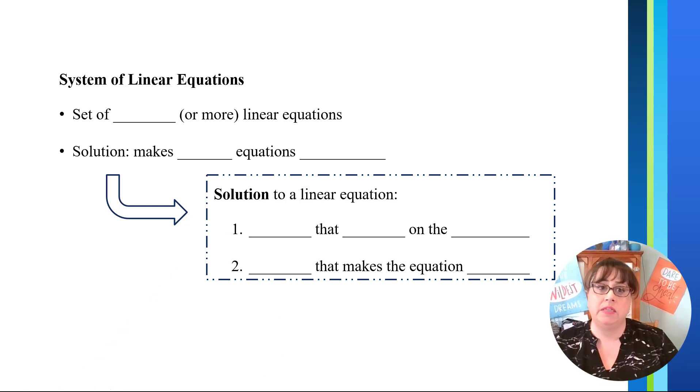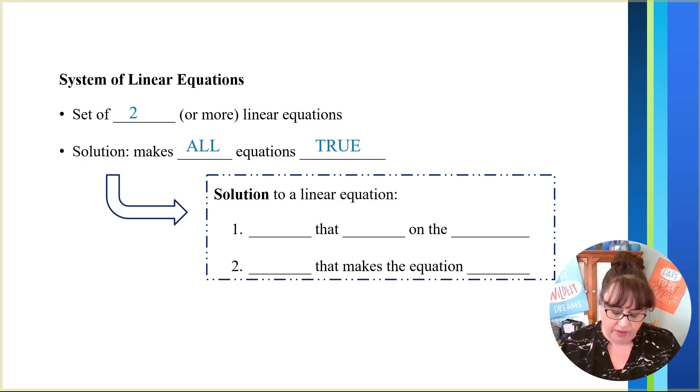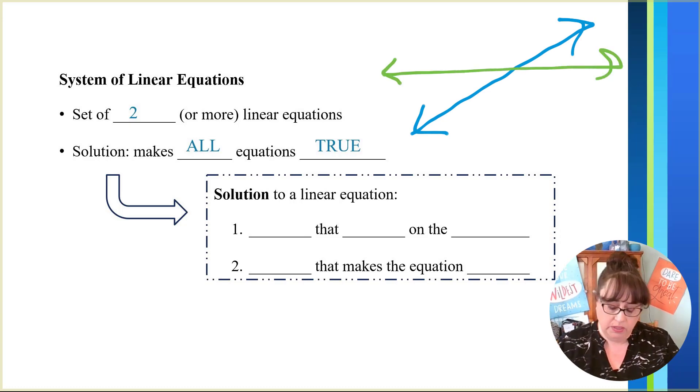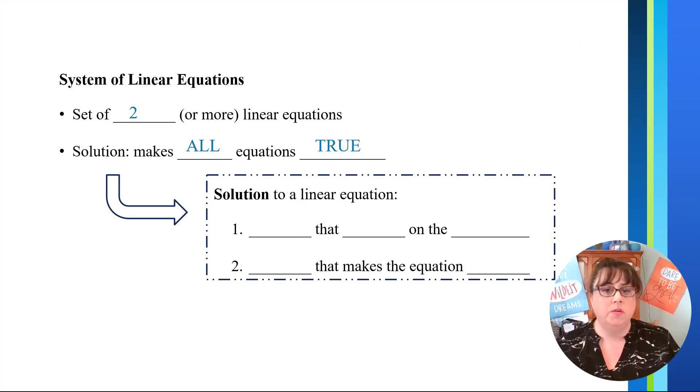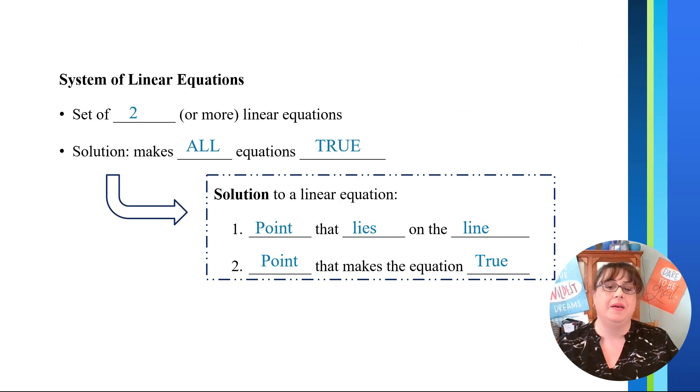So before we get started, we need to talk about what a system of linear equations even is. It is a set of two or more linear equations and what we're looking for is the solution that is going to make all of those equations true at the same time. So for example, if I have a line here and I have another line here, we're looking for the point that is going to make both of those lines true at the same time and that would be the point that is right here. And so that would be the solution that is making them both true at the same time. A solution to a linear equation is a point that lies on the line. So here you have again this example where the line is on both of them and the point makes both of the equations true.